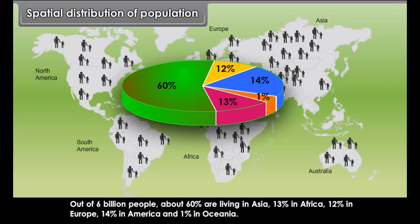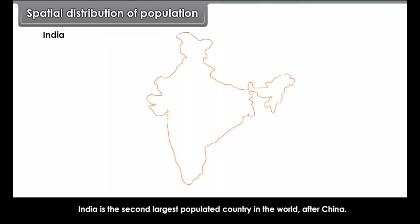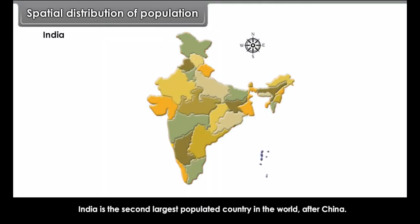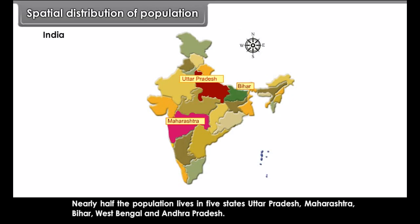The total number of people living in the world crossed 6 billion in 2001. Out of 6 billion people, about 60% are living in Asia, 13% in Africa, 12% in Europe, 14% in America, and 1% in Oceania.